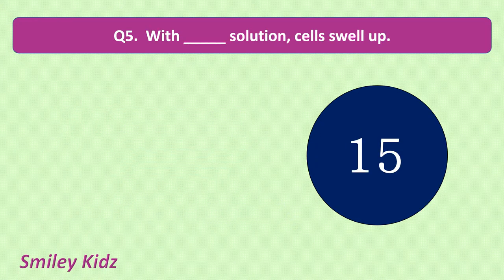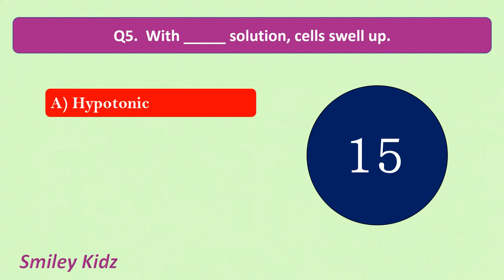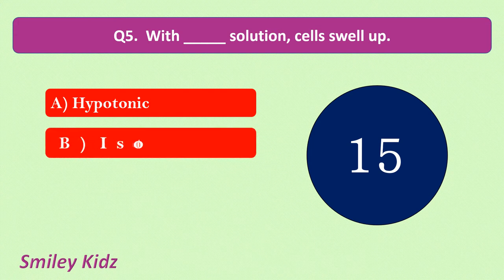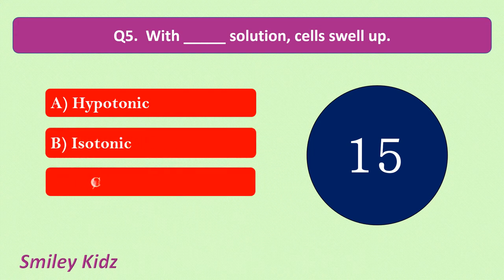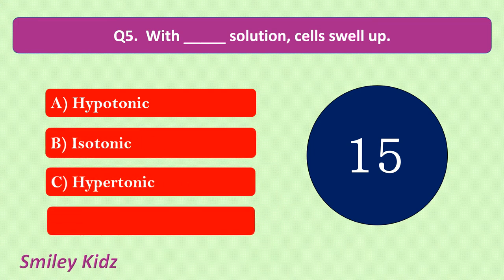Question number 5. With dash solution, cells swell up. Your options are: hypertonic, isotonic, hypotonic, none of these. Your time starts now.